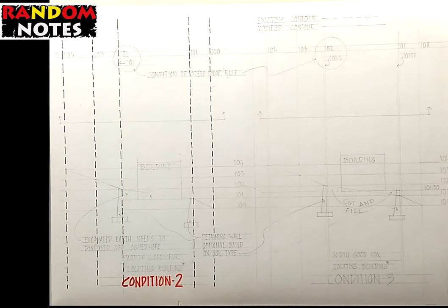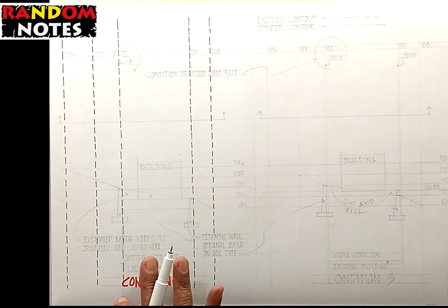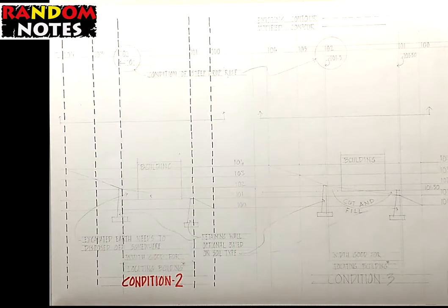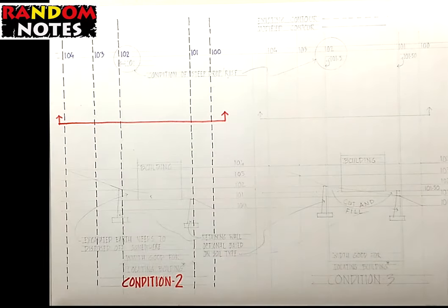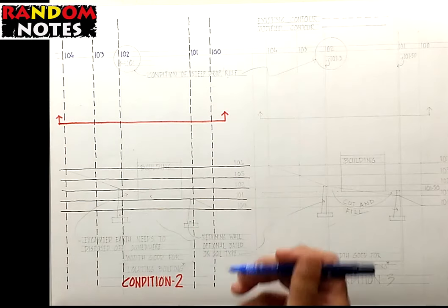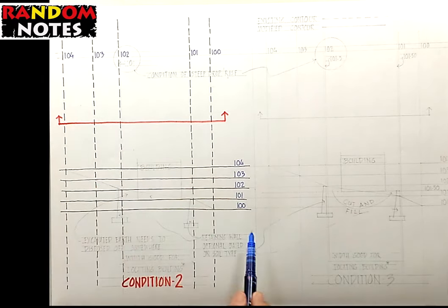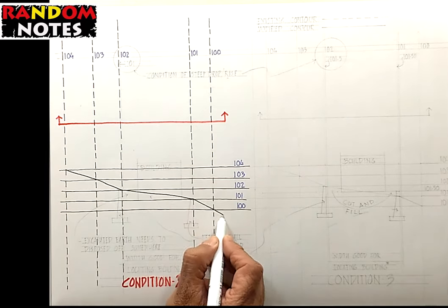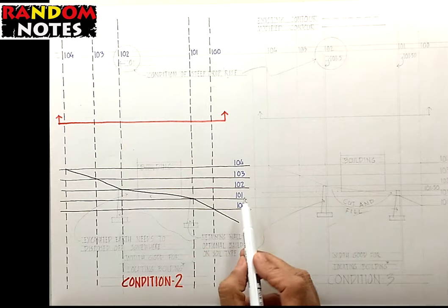In condition 2, we will locate the building within the same two contours, that is 101 and 102. But we will get a flat land at the lower level, that is 101. Let us understand this situation in a section through a similar exercise that we did for condition 1. In condition 1 we took the flat land for the building at level 102. In condition 2, the flat land for the building will be taken at level 101.